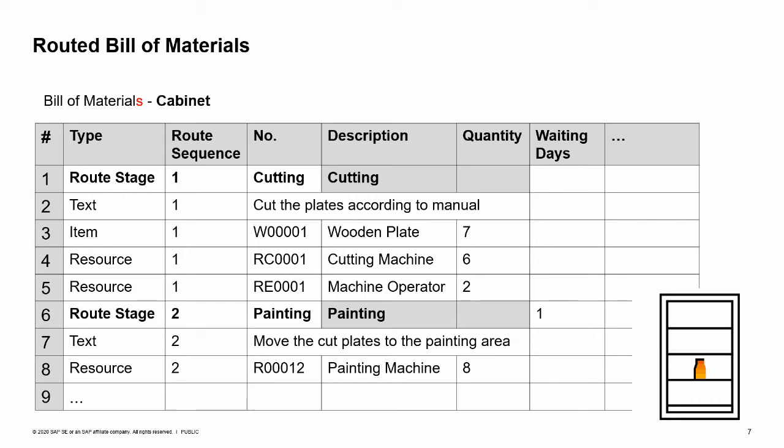In the first stage, wooden plates are cut using a cutting machine, handled by a machine operator. Only after this stage is completed can the production procedure continue to the next stage — painting of the plates. Note that there is one waiting day for the paint to dry after the stage is completed. The root sequence number sets the order of appearance in the bill of materials. To change the placement of the entire stage, choose a different sequence number in the header row. When you do this, all associated root sequence numbers are changed as well. When any other row is moved from one stage to the other, the row inherits the new stage root sequence number.